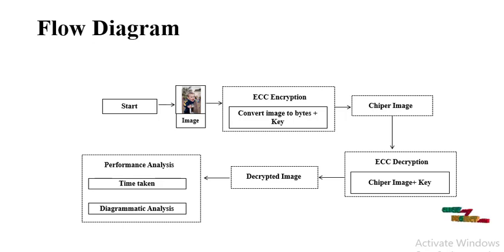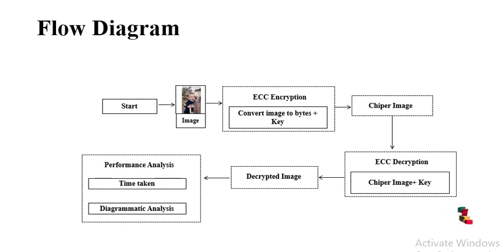Now let's see the flow diagram of this project. Initially, on the start page we select an image and load it for the encryption stage. In the encryption stage, the image is converted into bytes and, using the key, the encryption is performed.